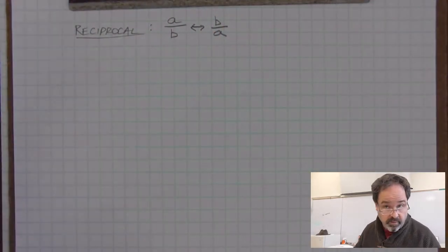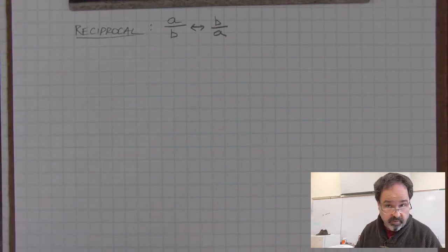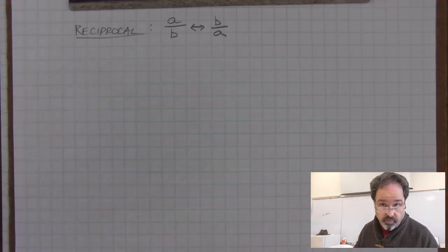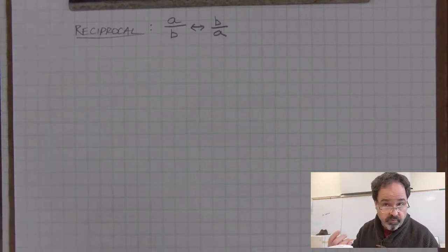Reciprocals are not equal. They're changing the expression into a different value, unless of course you're working with 1. 1 is its own reciprocal. We can think of the integer 1 as a fraction, 1 over 1, and if you switch, it doesn't change it.